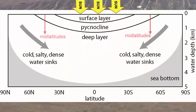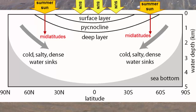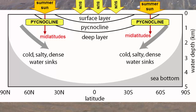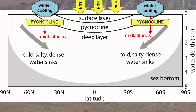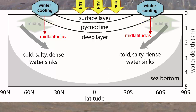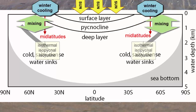In the mid-latitudes, the pycnocline comes and goes with the seasons. During summers, surface waters are heated up enough to separate from the deep water and stop mixing. In winter, however, the pycnoclines disappear as the surface waters cool, the surface and deep waters mix, and the depth profiles become more isopycnal.